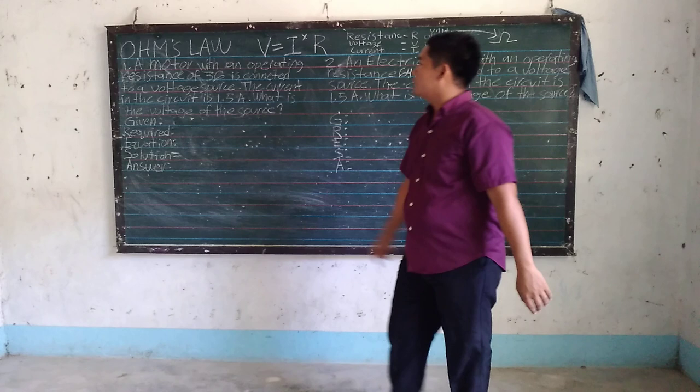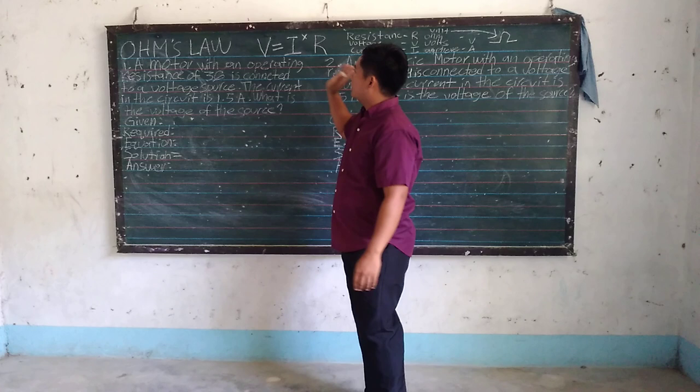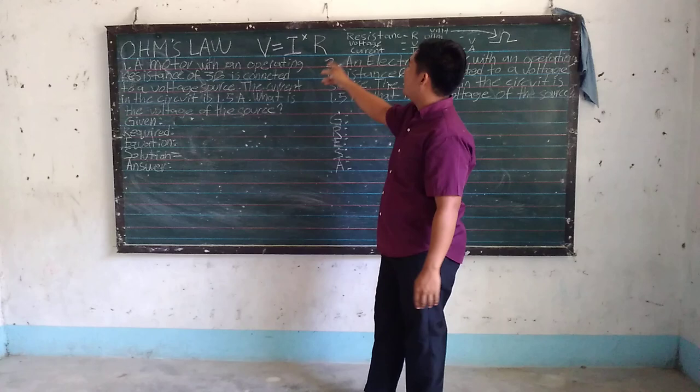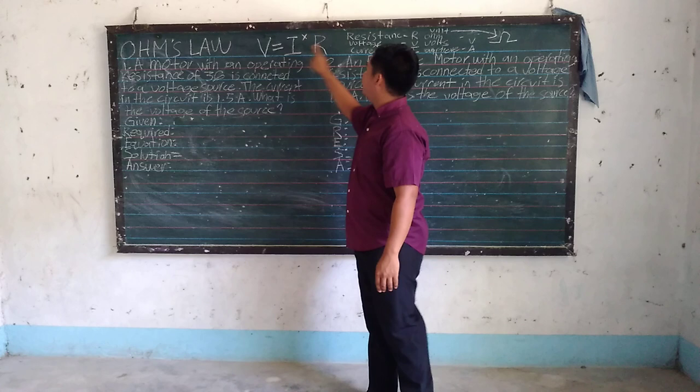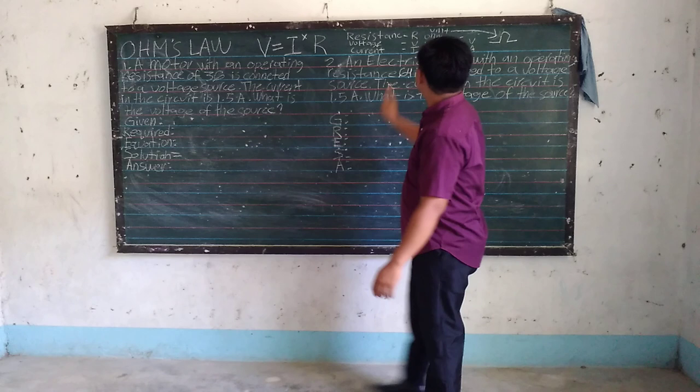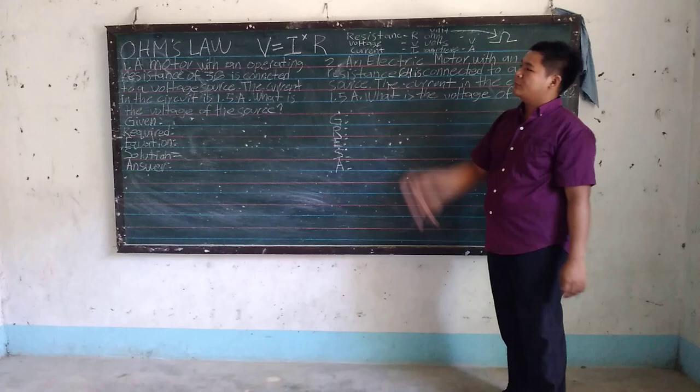So let's start. On Ohm's Law, the formula that we will use is V equals I times R. When you multiply I times R, you will find the voltage. If you multiply the amperes and the ohms, you will find the voltage.